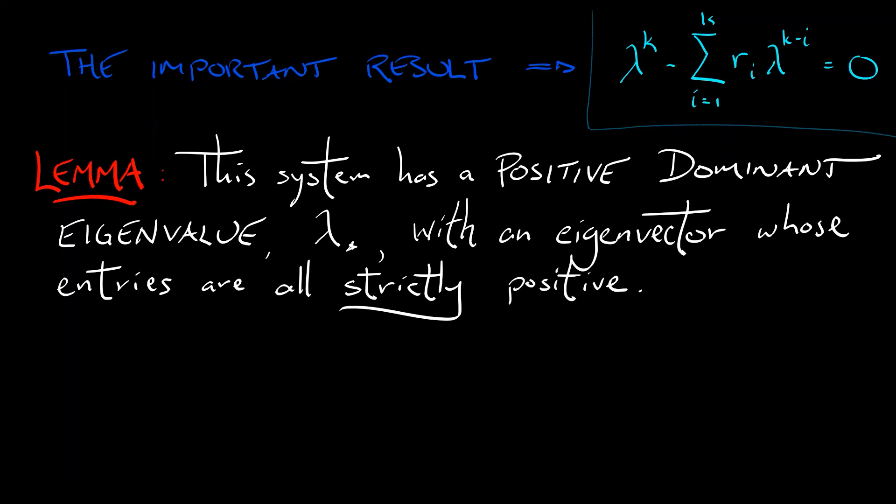Now that's a really important result. There's a little bit of fine print. Let's assume, for simplicity, that all of these reproduction rates, these R sub i values, are all strictly positive. So we've got that. How do you prove something like this? Yes, we need a dominant eigenvalue. That means it's bigger than all the other eigenvalues in modulus, since this is a discrete-time system.